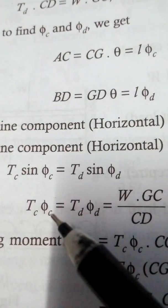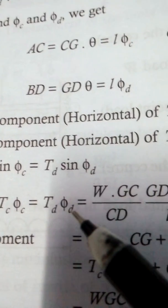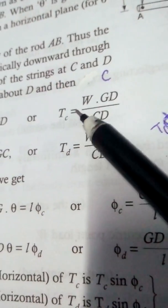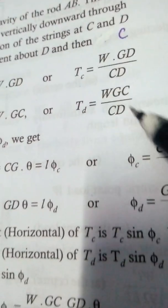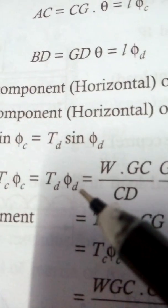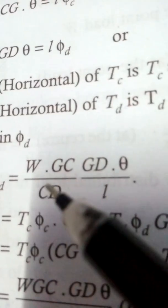So, TC·sin(phi C) = TD·sin(phi D), which gives TC·phi C = TD·phi D. We can replace phi D and TD in the previous equation using the expressions already found for TC, TD, phi C, and phi D.